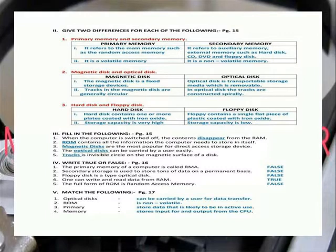Fill in the blanks. When the computer is switched off, the contents disappear from the RAM. ROM: the contents hold the information the computer needs when it starts up. Magnetic disk: are the most popular for direct access storage device. The optical disk can be carried by a user easily. Track: it's an invisible circle on the magnetic surface of the disk.